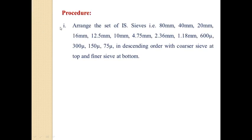So let us see the procedure for finding the fineness modulus. Firstly arrange the set of IS sieves: 80 mm, 40 mm, 20 mm, 16 mm, 12.5 mm, 10 mm, 4.75 mm, 2.36 mm, 1.18 mm, 600 micron, 300 micron, 150 micron and 75 micron and lastly the pan, in descending order with coarser sieve at top and finer sieve at bottom.